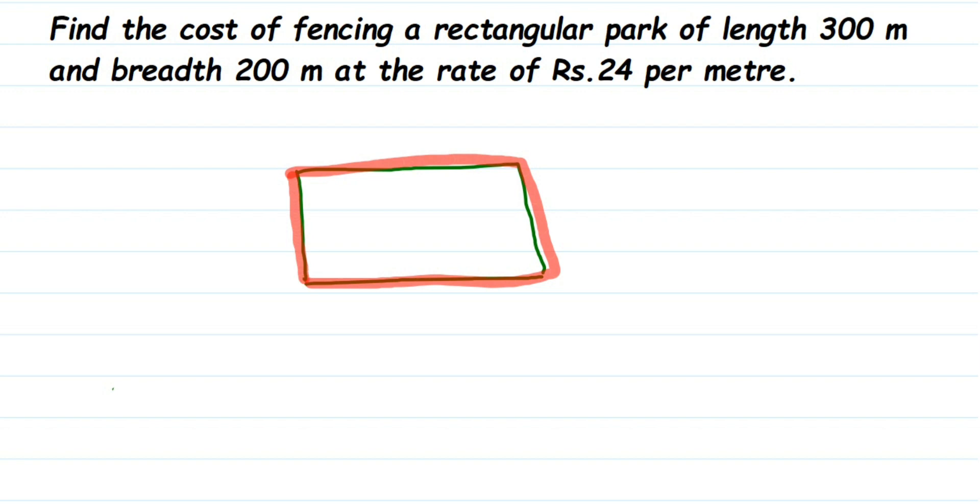First we have to find out the perimeter of this rectangular park, so we're going to get the total distance there. And then we have to find out the cost. So here the charging per meter is 24 rupees, so we're going to find out the total distance, the total length of the fence, and then we're going to find out the cost here.